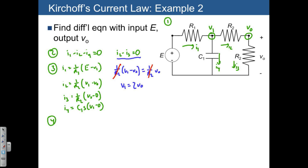Let's return to the first junction: I1 minus I2 minus I4 equals 0. This is just a matter of writing out all the terms and combining them.